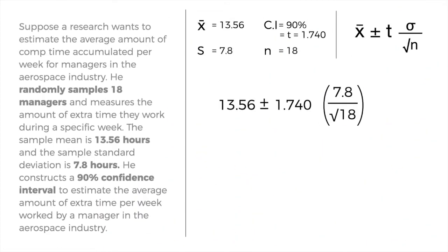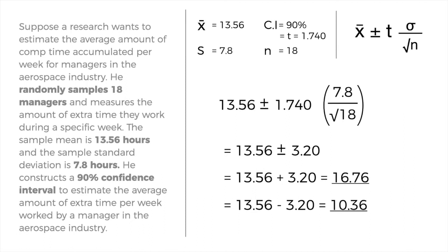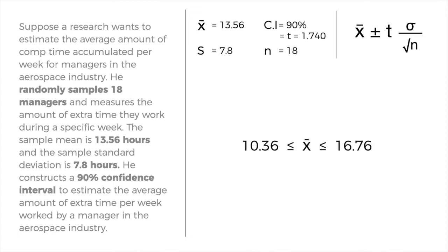With all values set, we substitute into the formula: 13.56 plus or minus 1.740 multiplied by 7.8, all over the square root of 18. This gives us 13.56 plus or minus 3.20, yielding two answers: 10.36 and 16.76. The final answer is written as 10.36 ≤ X ≤ 16.76. At 90% confidence, the true mean lies between 10.36 and 16.76.